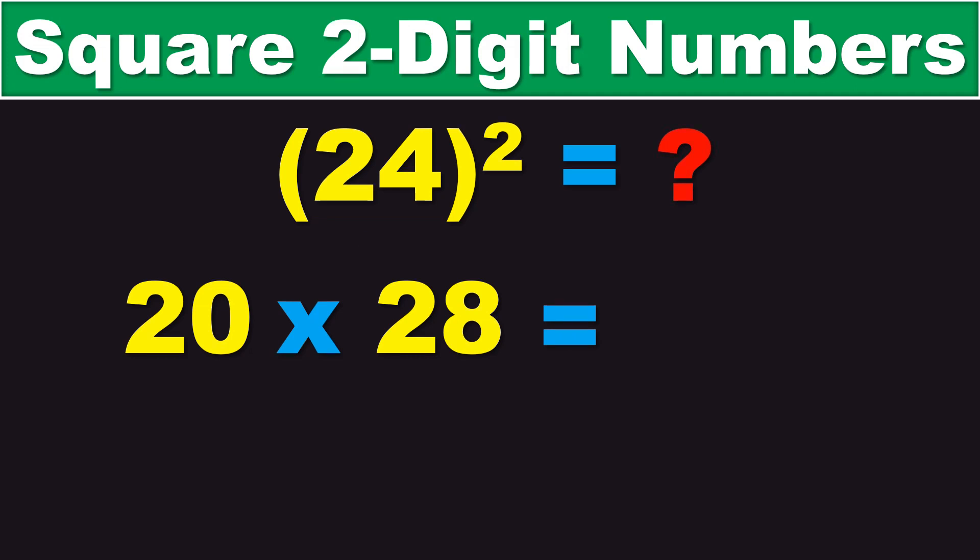Now, the next step in this trick is to multiply 20 times 28. And doing the math, that equates to 560. And then, the final step in all of this is to take that last digit of the original number, 24, and then, square that digit.